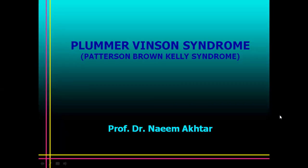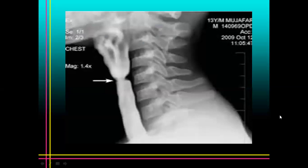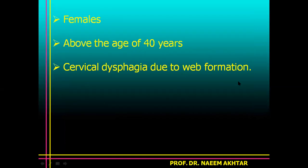The third topic for discussion today is Plummer-Vinson syndrome. You can see this is a narrowing at the upper end of the esophagus due to a web formation. Usually the patients of Plummer-Vinson syndrome are females above the age of 40 years, and cervical dysphagia is seen in these patients due to web formation.